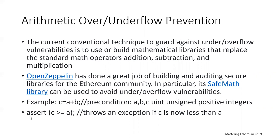We can do something as simple as one extra line of code right after the addition: assert that C is greater than or equal to A. It will throw an exception if C is now less than A. If B is zero, it's okay that A equals C. But A should never go below C — and if it did, we had an overflow or underflow, so we throw an exception. One extra line of code can solve this problem, but the OpenZeppelin SafeMath library puts in a lot of protections to help avoid these vulnerabilities.